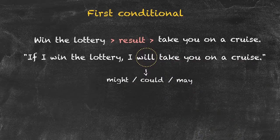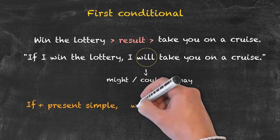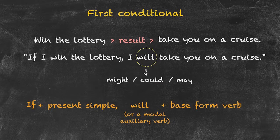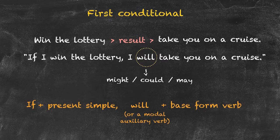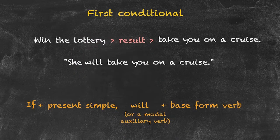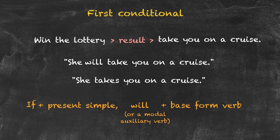Let's have a look at the structure. As with the zero conditional, we have 'if' plus a present simple clause, and in the second clause we have 'will' or another suitable modal auxiliary verb, followed by the base form of the verb. Why do we refer to this as the base form rather than present simple? Consider changing the pronoun: 'I will take you on a cruise' to 'she will take you on a cruise.' With present simple, it would be 'she takes you on a cruise,' but we don't conjugate the verb as we would in a normal present simple sentence.